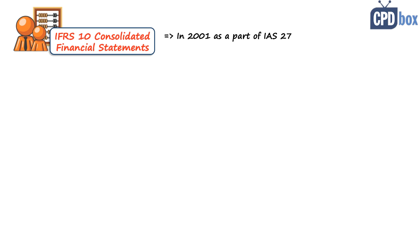IFRS 10 rules were originally part of the standard IAS 27 since 2001. At that time, IAS 27 covered both separate and consolidated financial statements. There were a few changes in IAS 27, and a major revision took place in 2011 when the IASB issued a new standard, IFRS 10, dealing solely with consolidated financial statements.